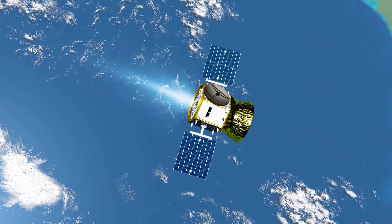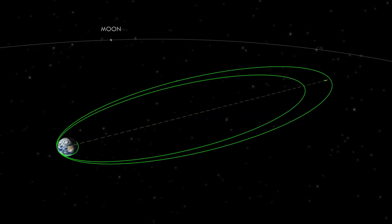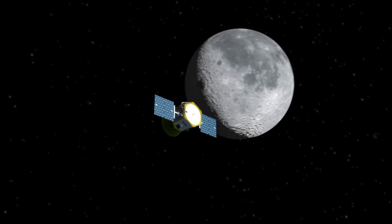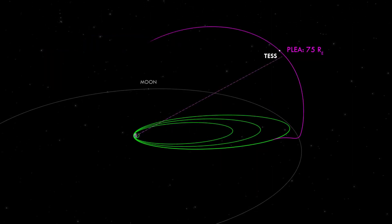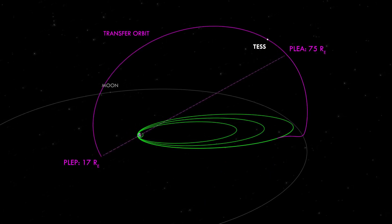At that point, the SpaceX portion of the mission will be complete, but TESS will have more adjustments to make before it reaches its final orbit. TESS will perform several adjustments to increase its apogee out even further, eventually performing a lunar flyby to get a gravity boost from the Moon. That gravity boost will change the orbital inclination to tilt the orbit downward about 37 degrees and extend it out even further.